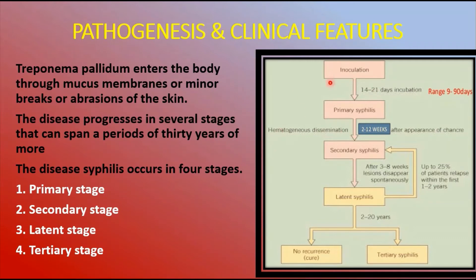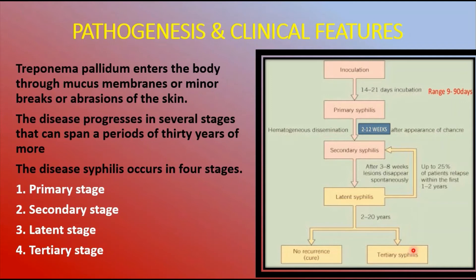Regarding pathogenesis and clinical features: Treponema pallidum enters the body through mucous membranes or minor breaks or abrasions of skin at the genital regions during sexual intercourse. The disease progresses in several stages that can span 30 years or more. Syphilis occurs in four stages: primary stage, secondary stage, latent stage, and tertiary stage.